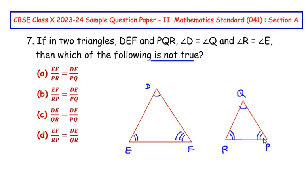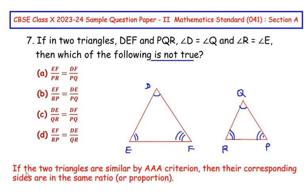Now here we can see that the two triangles are similar by AAA similarity criterion because all the angles of triangle DEF equal all the angles of triangle PQR. The theorem states: if two triangles are similar by AAA criterion, then their corresponding sides are in the same ratio or proportion.